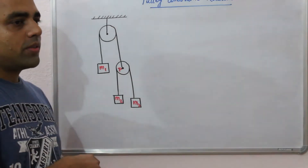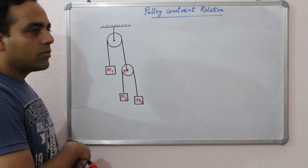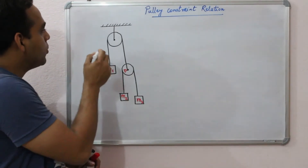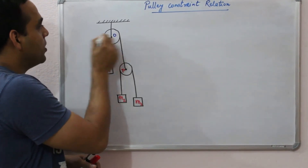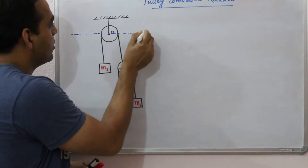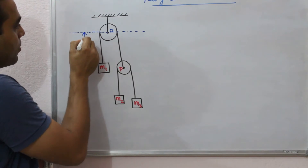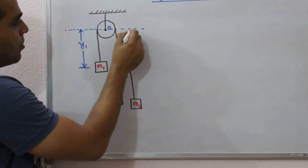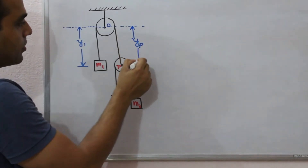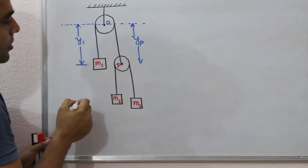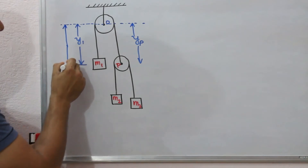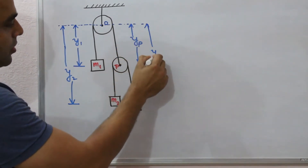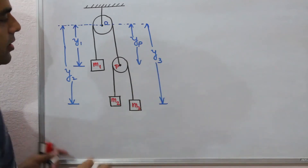Now we have to write down the pulley constraint relation. For this I will introduce some coordinate functions for block M1, M2, and M3. I am going to assign the center of the fixed pulley as the origin, so this is the reference line. Let Y1 be the coordinate function for block M1, YP be the coordinate function for movable pulley P, Y2 be the coordinate function for block M2, and Y3 be the coordinate function for block M3.